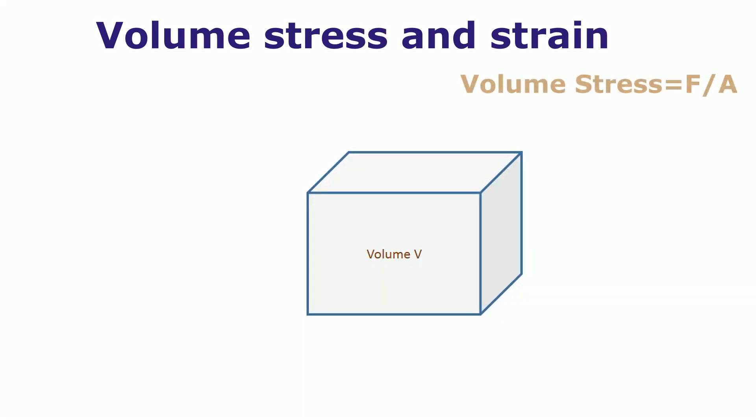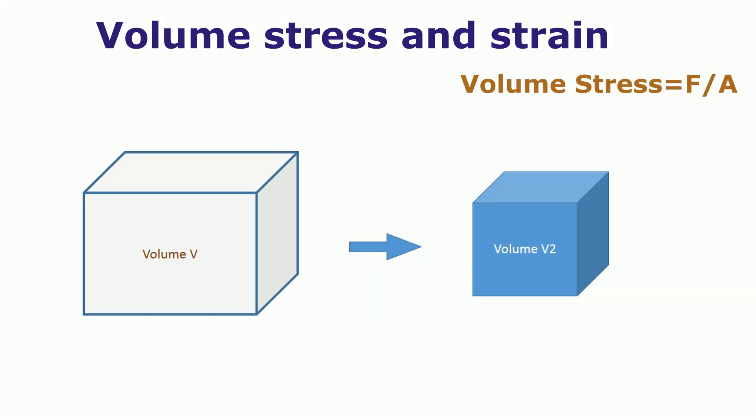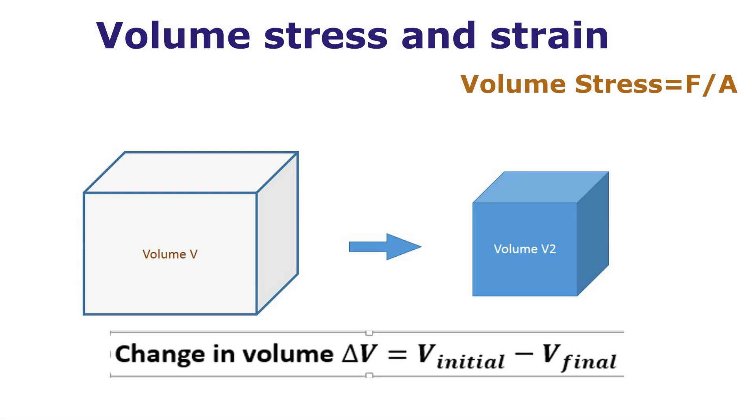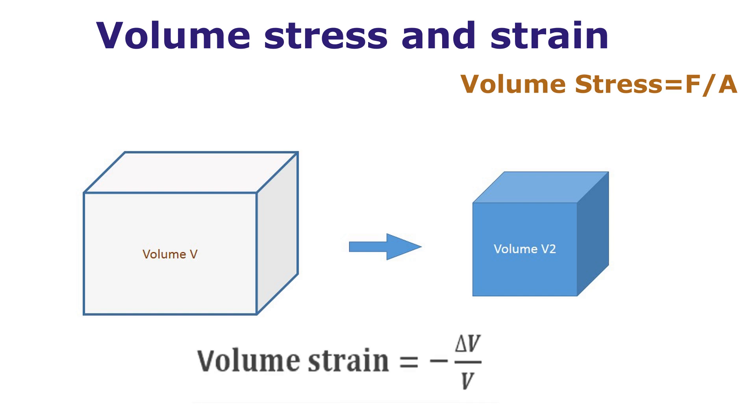When we apply forces to this box, a change occurs in the volume. The initial volume is V while the final volume is V2. Taking the ratio between the change in volume and its original volume is known as strain, or volume strain. So volume strain equals ΔV/V.